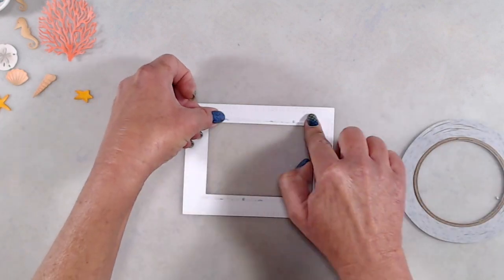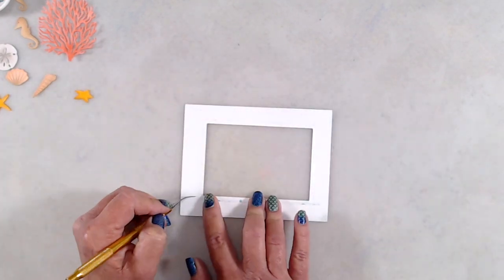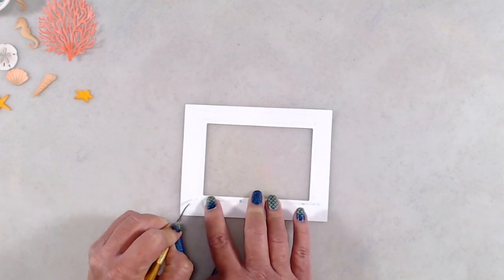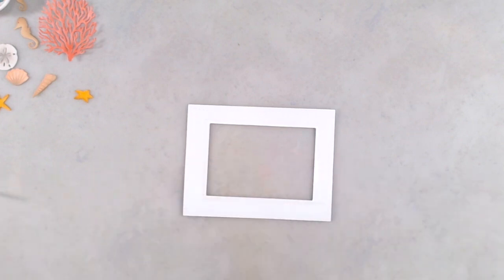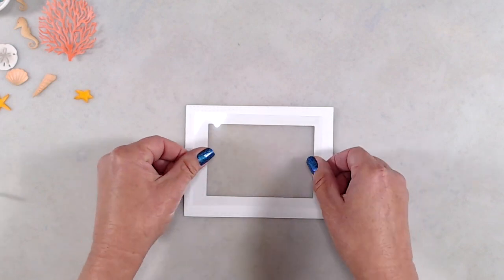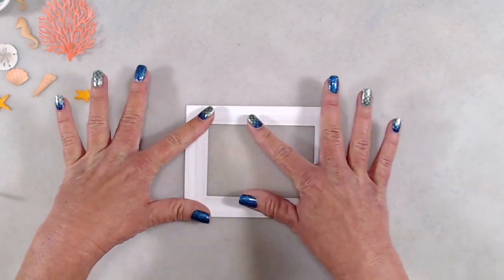I used some double-sided tape on the back side of my die cut frame, and I had that tape pretty close to the edge. I removed that release paper, and then I adhered a piece of acetate on the back side of that.